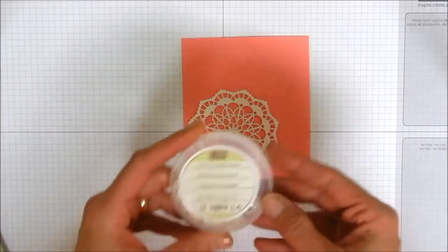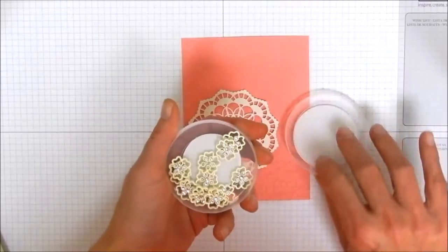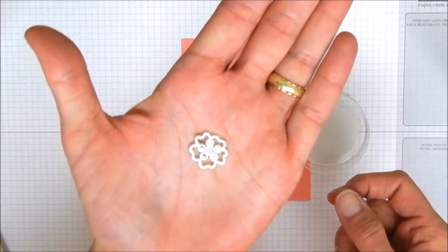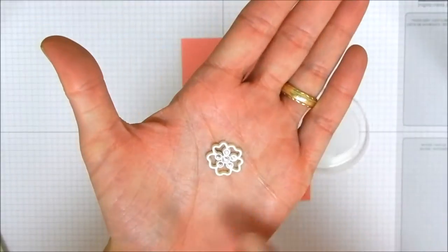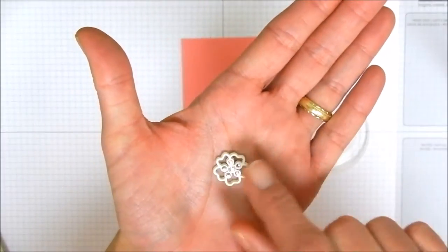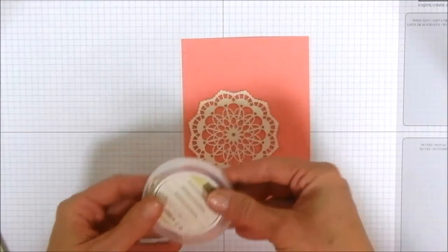One of the other embellishments are these little falling in love embellishments and these look a lot like ones that we had not too awful long ago. They're these little flowers with the gemstones but these are not silver. These are very vanilla in color and so those are really pretty. We're going to need one of those for our card today.